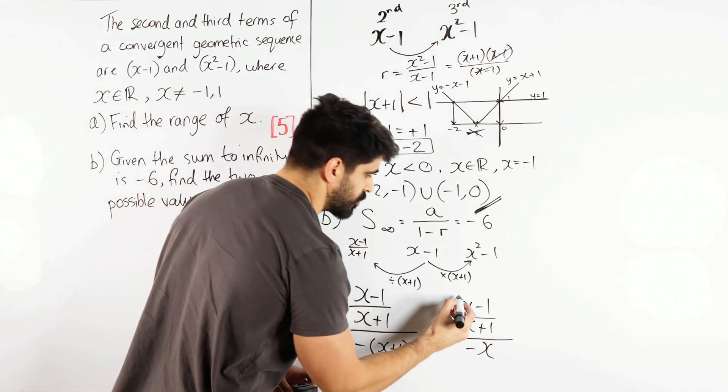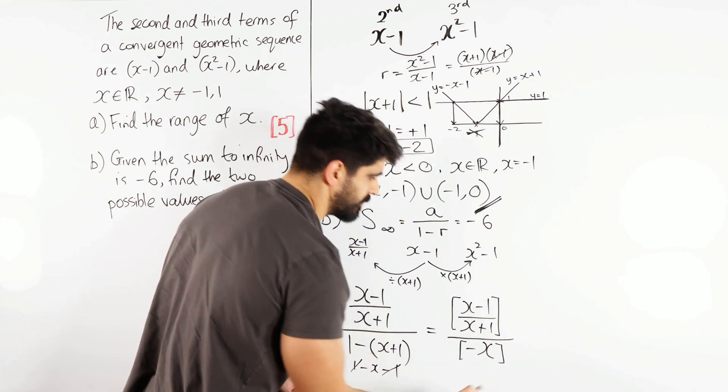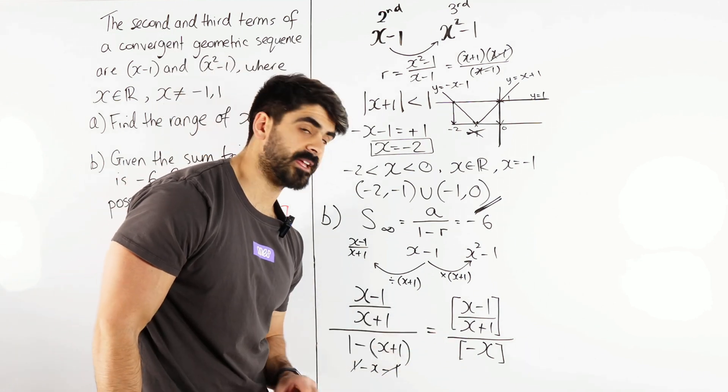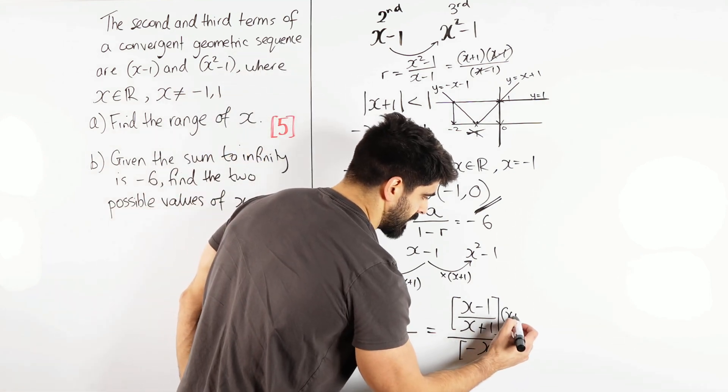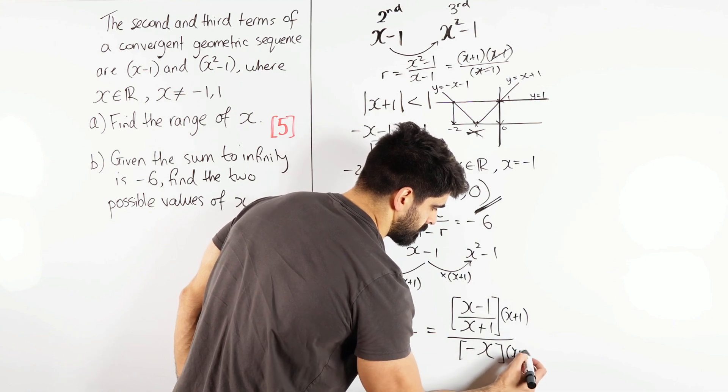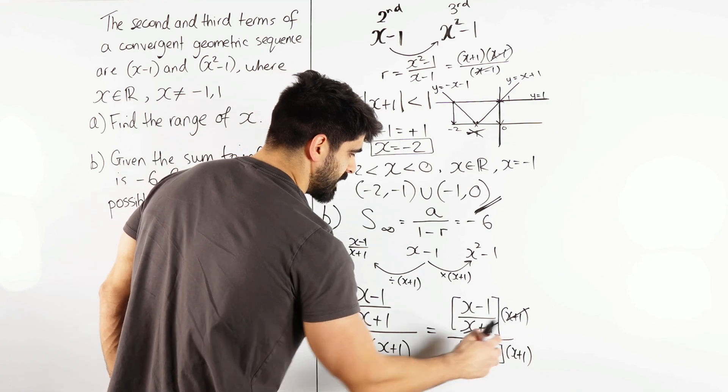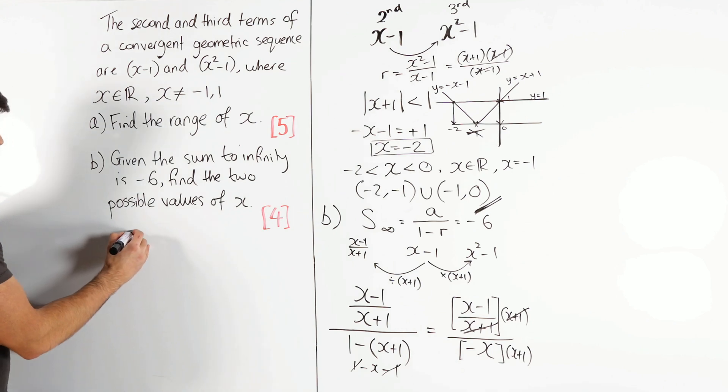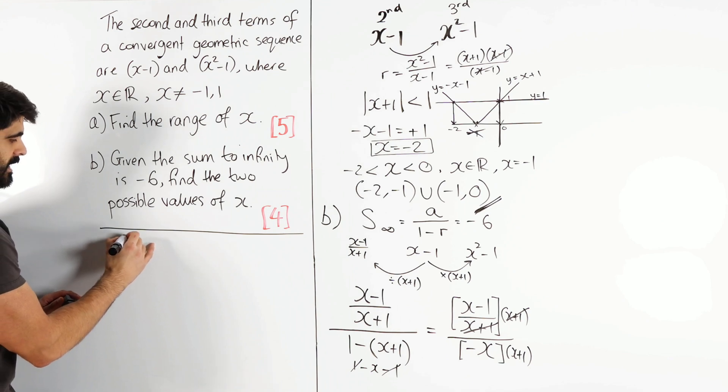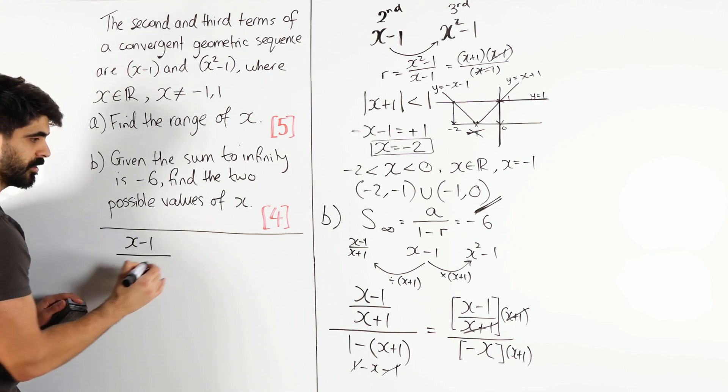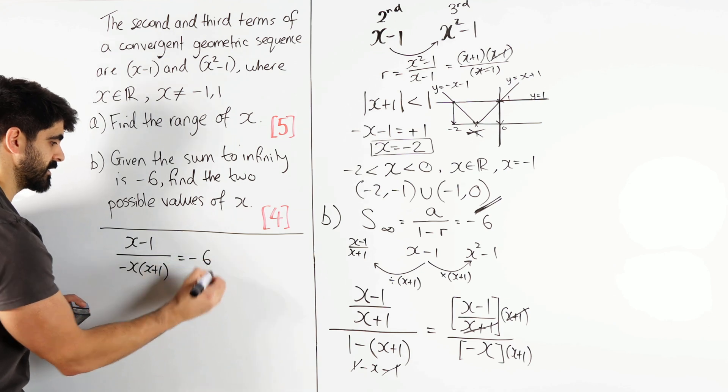So what does that mean? It means here's your numerator, that's your a, and this separately is the denominator. So you're saying what do you need to times top and bottom by to get rid of that denominator within the numerator? We need to times top and bottom by x plus 1. So that cancels with that, and we're left with x minus 1 over minus x, x plus 1. So we're left with x minus 1 over minus x lots of x plus 1 is minus 6.